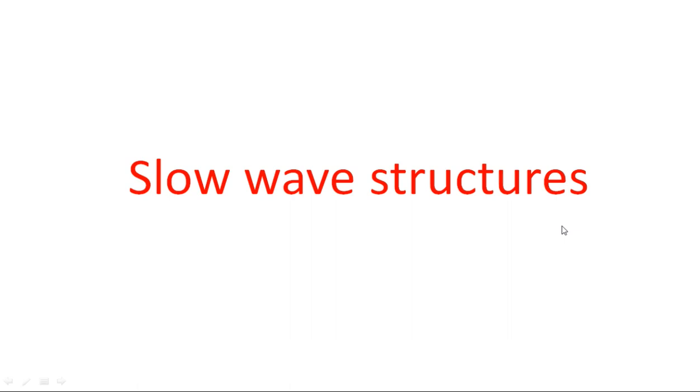In this video I am going to explain about slow wave structures — what they are, what their advantages are, and what different types are available. The main purpose of the slow wave structure is to make the signal which propagates in the tube slow down, meaning its velocity is going to be reduced.